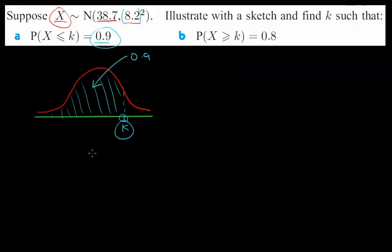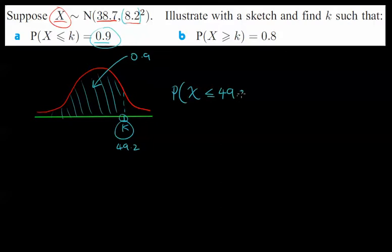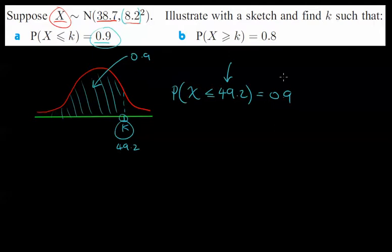The result is 49.2. So if the measurement x — whether height or weight — is less than or equal to 49.2, the probability of that happening is 0.9. This is working backwards from previous examples: previously we were given the k-value and asked for the probability; here we're given the probability and solving for the actual value on the x-axis.